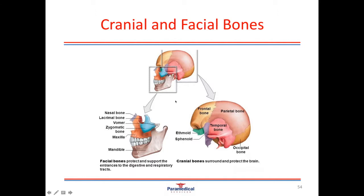Looking further down to the facial bones — bones to remember: the nasal bone; the zygomatic bone or zygoma, which is the cheekbone; the top part of the jaw which is called the maxilla; and the bottom part of the jaw called the mandible.